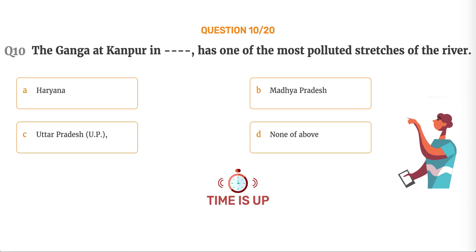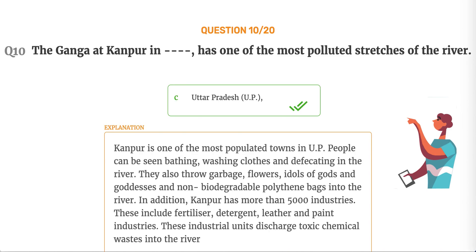The correct answer is Option C, Uttar Pradesh. Kanpur is one of the most populated towns in U.P. People can be seen bathing, washing clothes and defecating in the river. They also throw garbage, flowers, idols of gods and goddesses, and non-biodegradable polythene bags into the river. In addition, Kanpur has more than 5,000 industries, including fertilizer, detergent, leather and paint industries. These industrial units discharge toxic chemical wastes into the river.